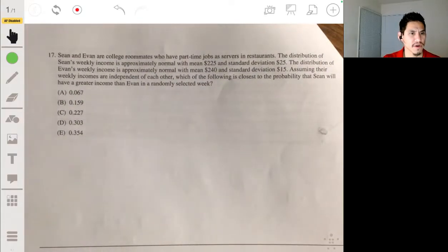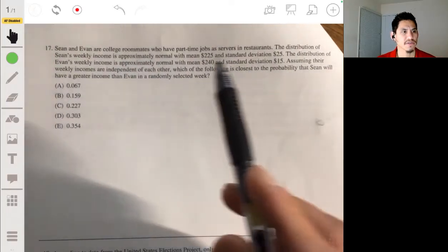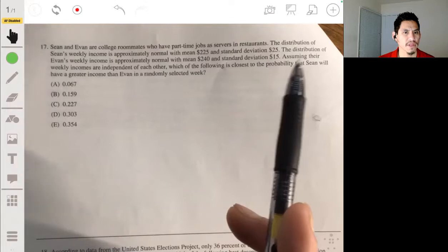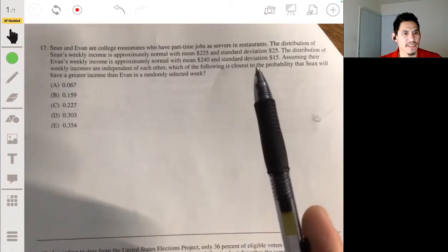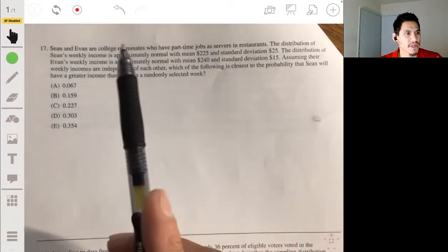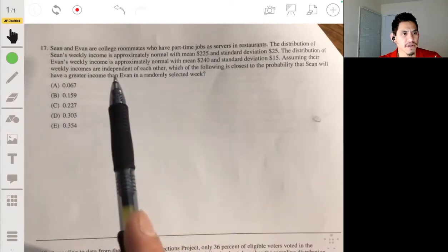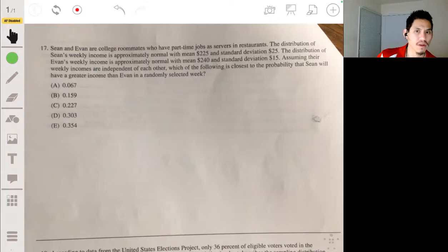Alright, 17. Sean and Evan are college roommates who have part-time jobs as servers in restaurants. The distribution of Sean's weekly income is approximately normal with mean $225 and standard deviation $25. The distribution of Evan's weekly income is approximately normal with mean $240 and standard deviation $15. Assuming their weekly incomes are independent of each other, which of the following is closest to the probability that Sean will have a greater income than Evan in a randomly selected week? Alright, so this is going to be a calculation with random variables.